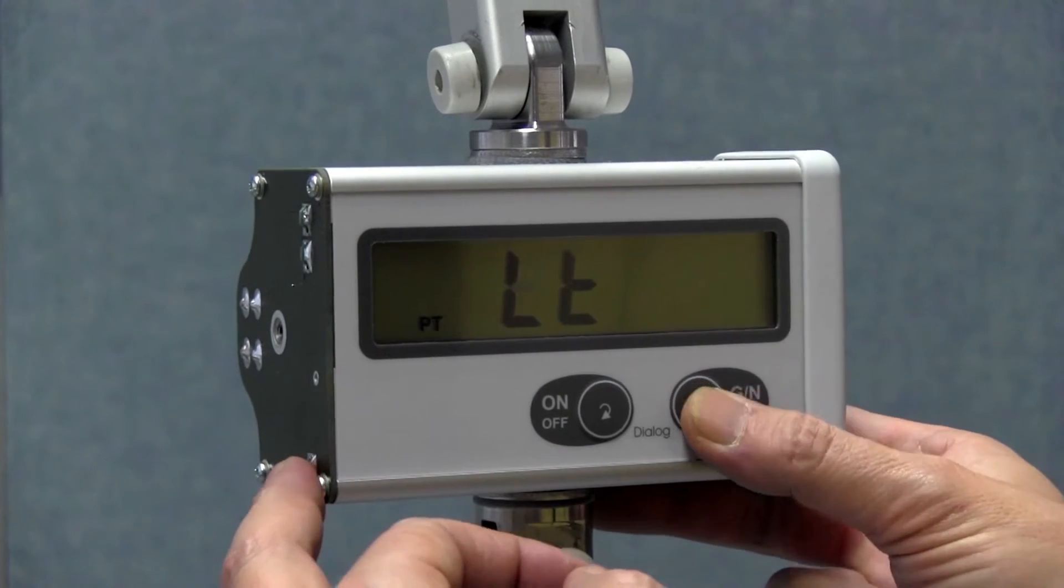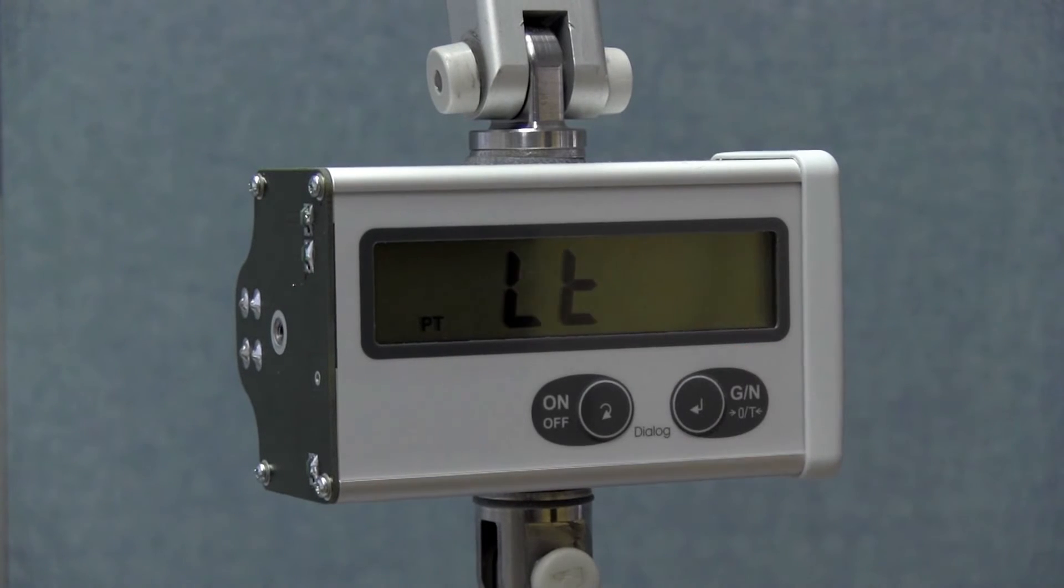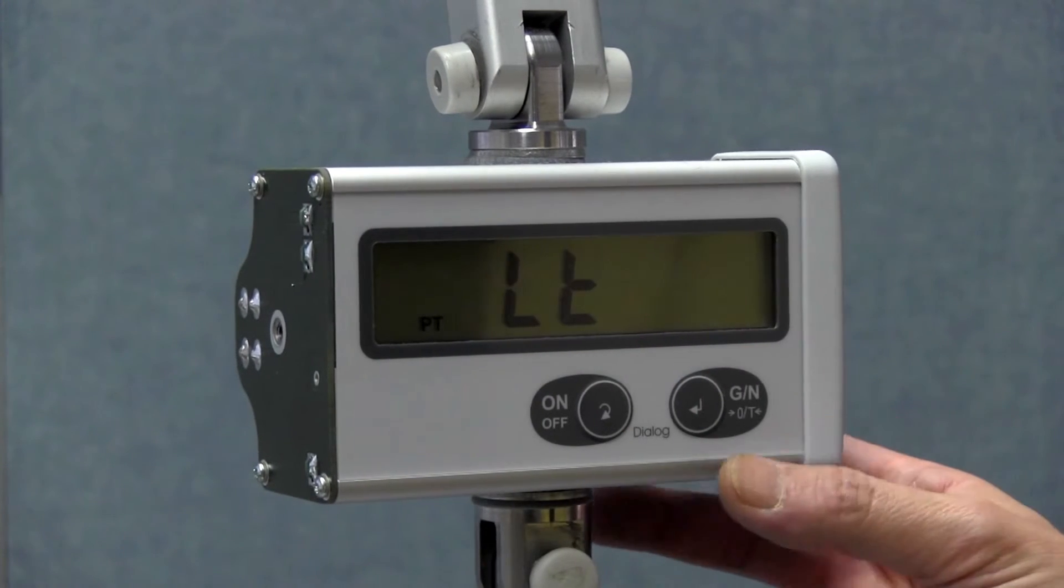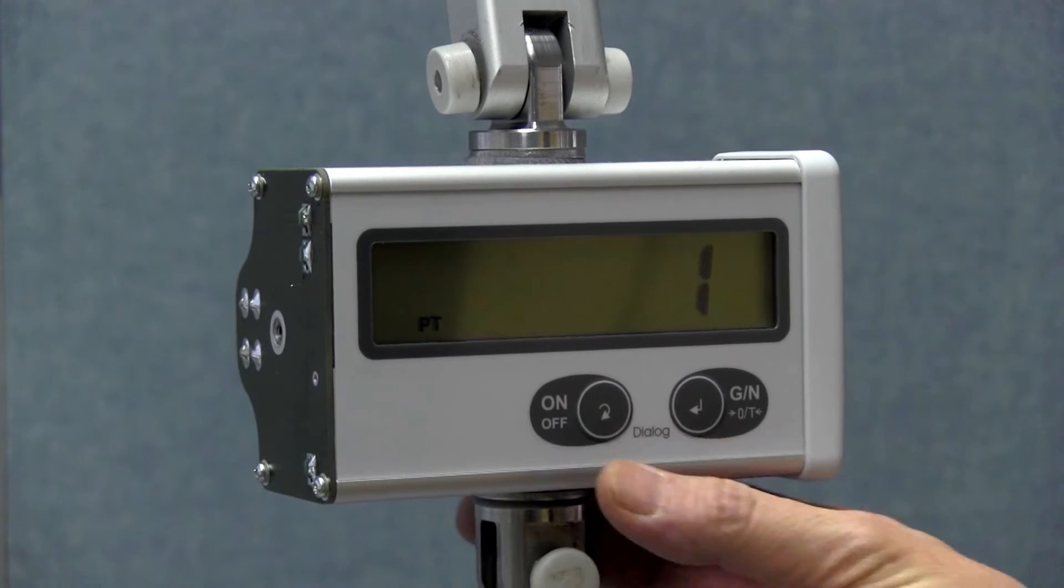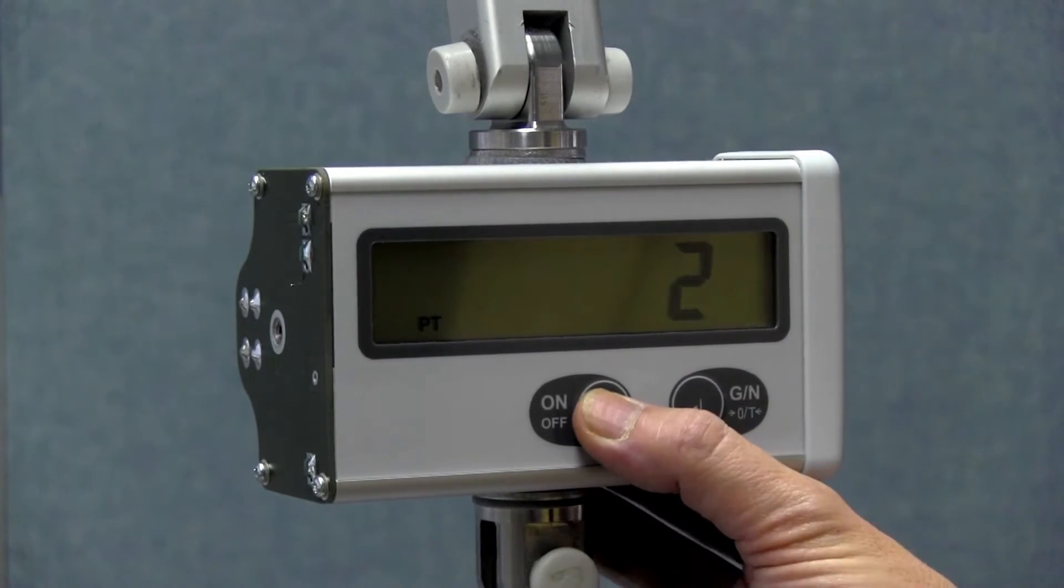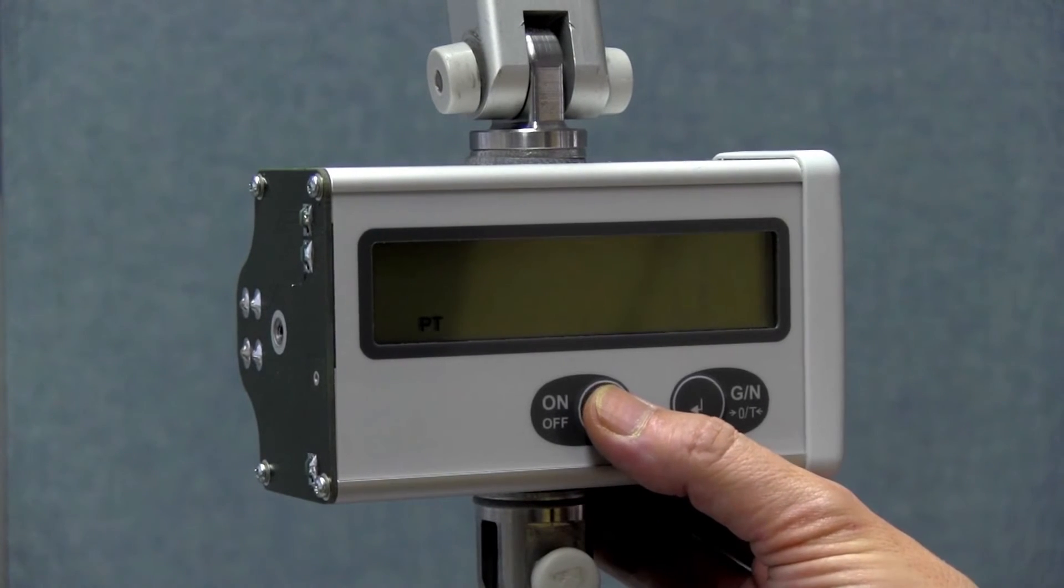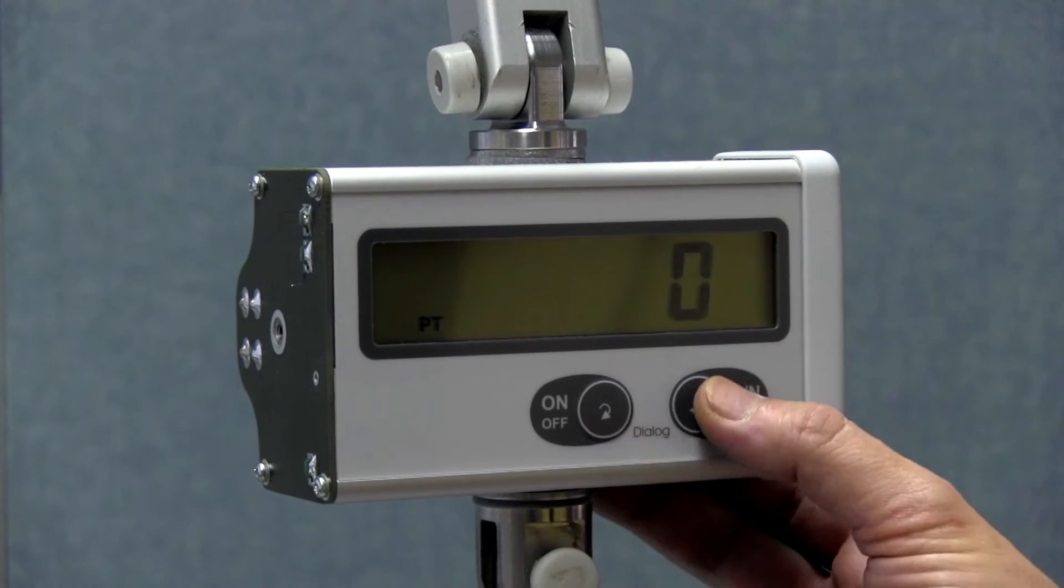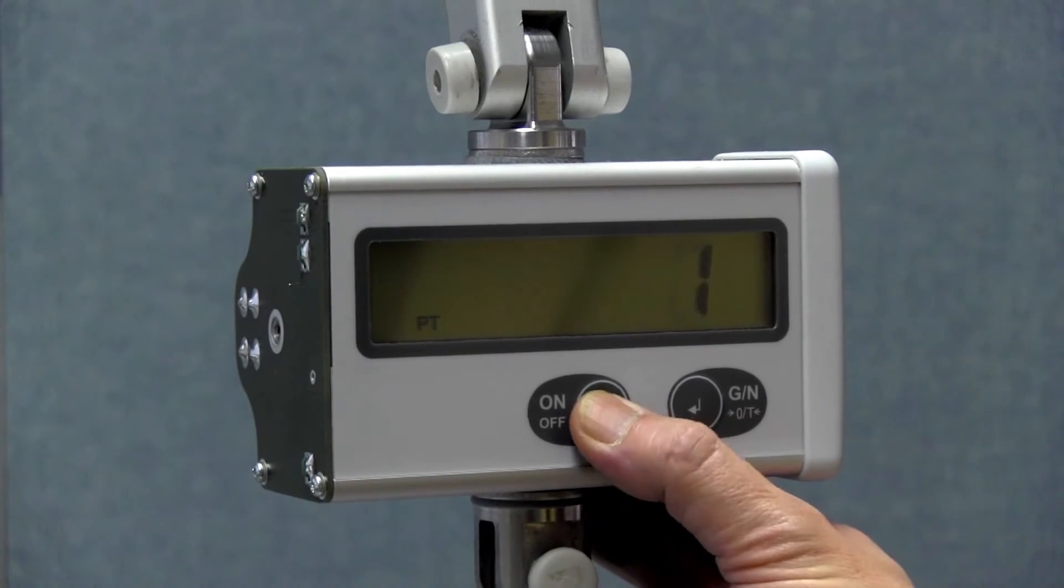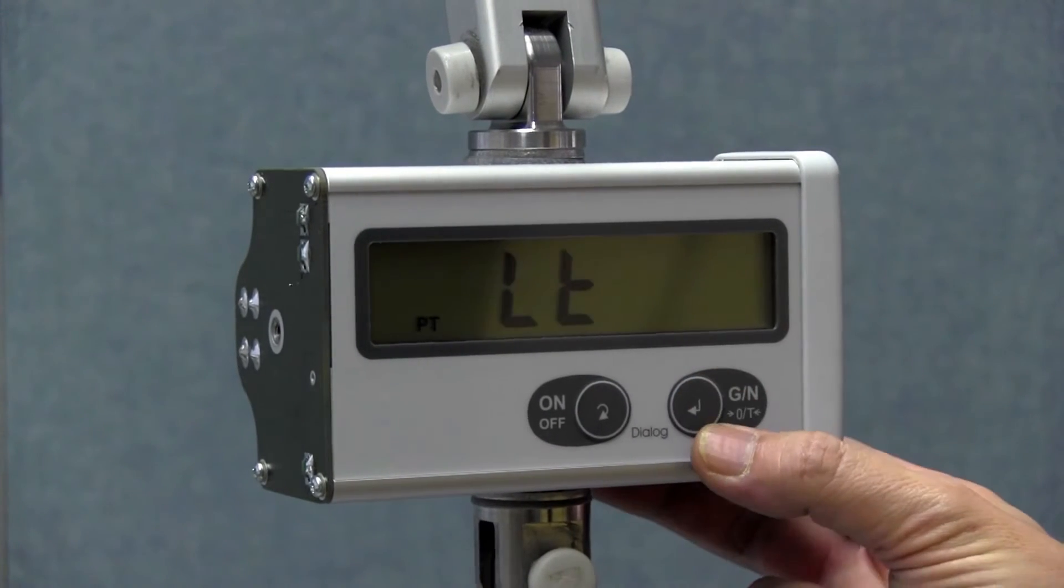The next query item for calibration in a partial load range is legal for trade. Am I in a legal for trade or not legal for trade mode of the scale? The sling scale permits three selection criteria. Zero for not turned on, one for OIML, and two for NTEP, which indicates legal for trade capability in the USA. I select one for OIML, and confirm with the GN key.